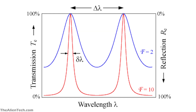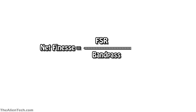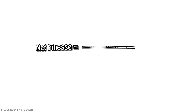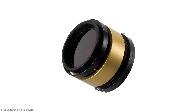If the gap between the etalon mirrors is less, then the free spectral range is more. The fifth parameter is the etalon net finesse — it is the ratio of free spectral range and bandpass. If the etalon net finesse is less, then it will not block out-of-band leakage. In the case of finesse, the bigger is better. If the etalon finesse is 30, then it will have good performance and will block out-of-band leakages. All these parameters are applicable to a single etalon.